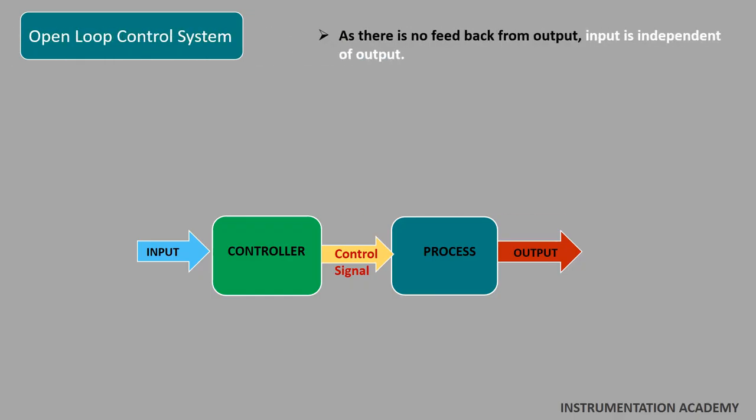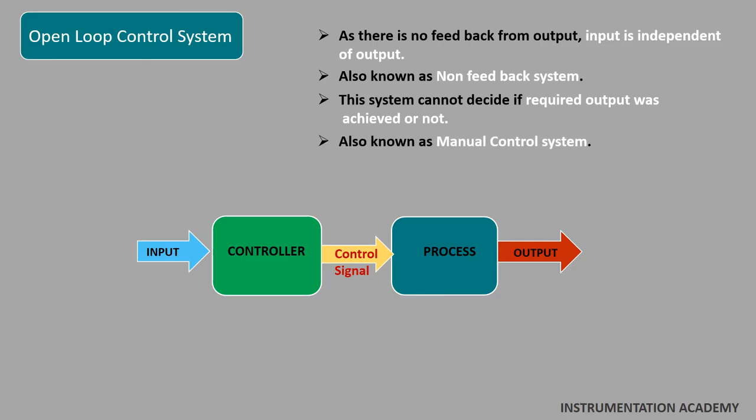So this system is also known as non-feedback system. As this system does not have any feedback from output, the system cannot decide if the required output was attained or not. Open loop control system is also known as manual control system.